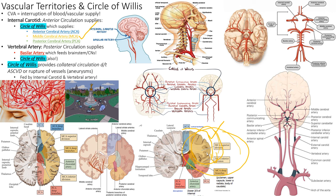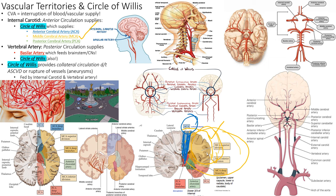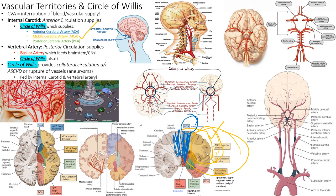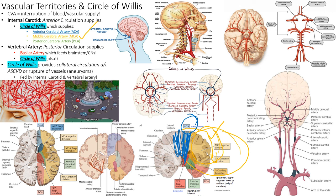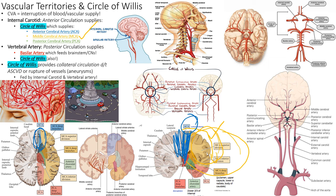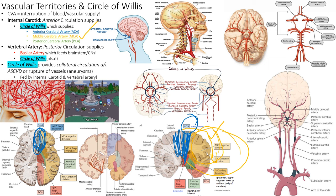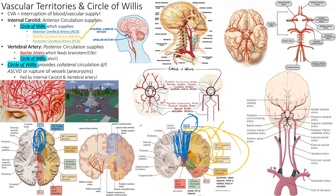The ACA is in blue here. ACA feeds this inner portion of the brain. And that inner portion, if you look back at the homunculus, it feeds the genitalia — so you get incontinence. It feeds the legs, so they can't walk well. And also, if you look at it from top down, it's also feeding a little bit of the frontal lobe. So now the frontal lobe is being affected. And what's the frontal lobe responsible for? Executive function. What does executive function mean?